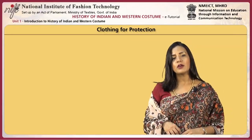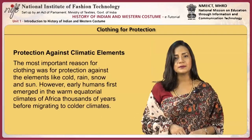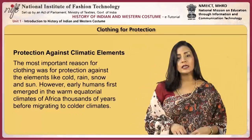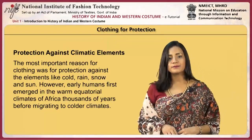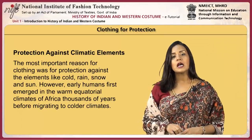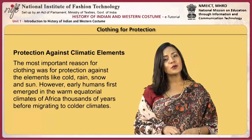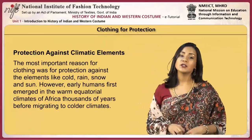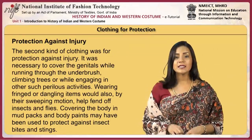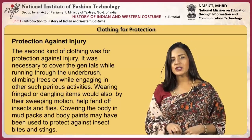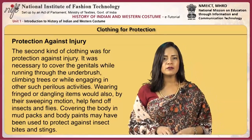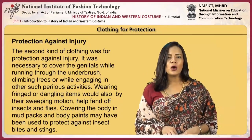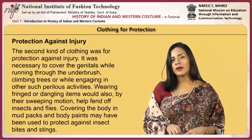Early humans used clothing for a number of reasons. The most important reason for clothing was for protection against the elements like cold, rain, snow and sun. However, early humans first emerged in the warm equatorial climates of Africa, thousands of years before migrating to colder climates. The second kind of clothing was for protection against injury. It was necessary to cover the genitals while running through the underbrush, climbing trees or while engaging in other perilous activities.